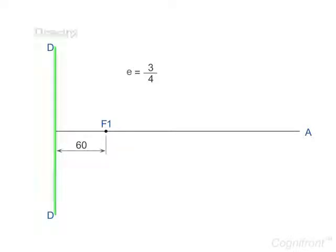First we shall draw the directrix as a vertical line DD of length say 200 mm. Then from midpoint of this line O draw an axis line OA perpendicular to it.